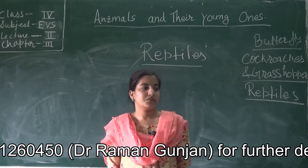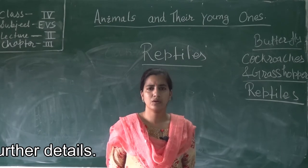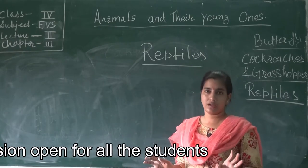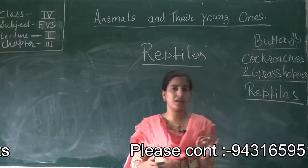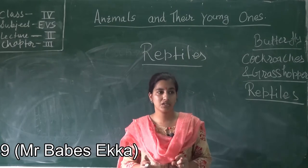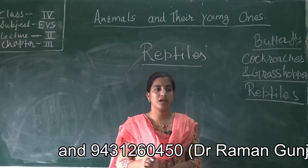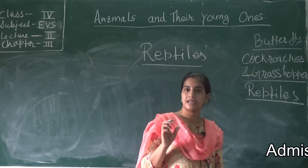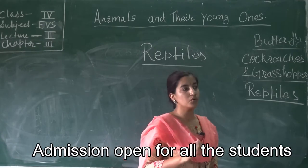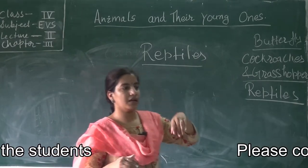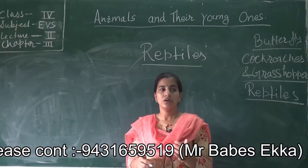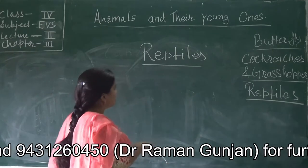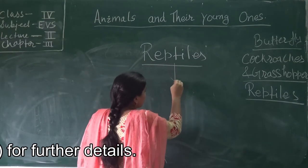Only some eggs from the total number of eggs laid will hatch, because not all eggs get proper conditions and proper temperature. That is why most of the eggs become destroyed. Some eggs which get proper incubation, proper temperature, and proper warmth hatch with the help of warmth from the sun. That heat gives proper incubation to those eggs and the eggs hatch and develop into new young ones. The rest are eaten by other animals.